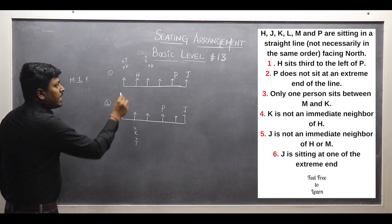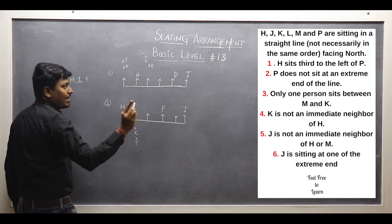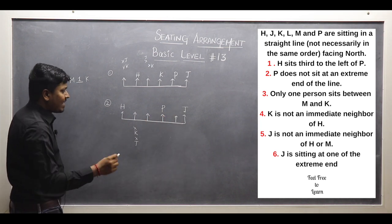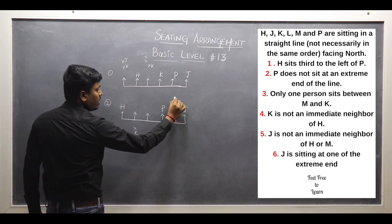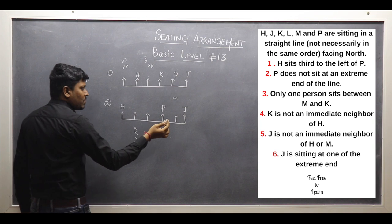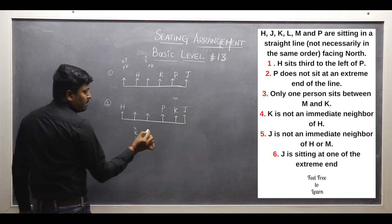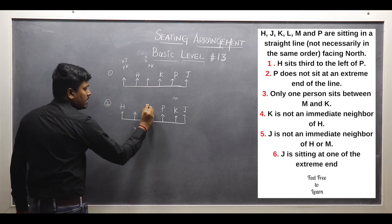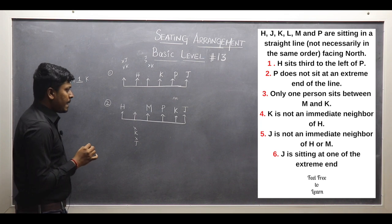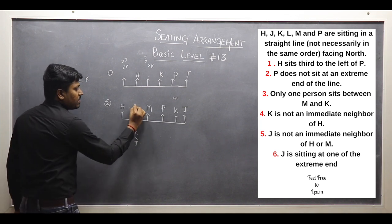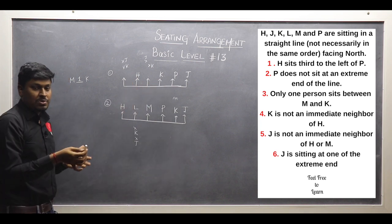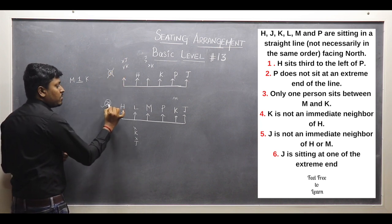Now in diagram 1, we cannot place K adjacent to H, so only one position remains for K. But according to point 3, between K and M there should be a gap of one person — and with K fixed there, there is no valid position for M. Also, J is not an immediate neighbor of H or M, so this position is not for M, and K must go here. Between K and M there must be a gap of one, but there is no chance of fixing M accordingly. So possible diagram 1 is completely wrong — only possible diagram 2 is correct.